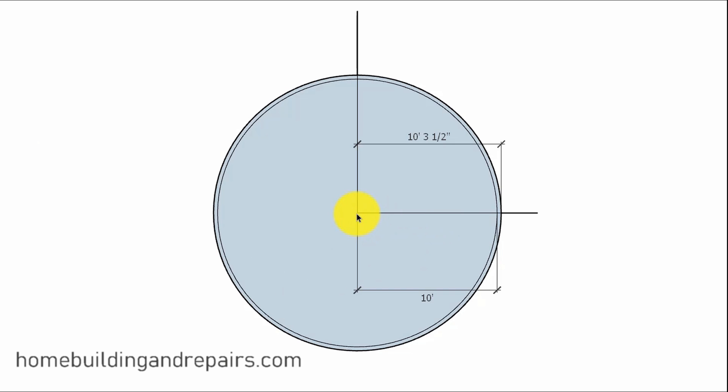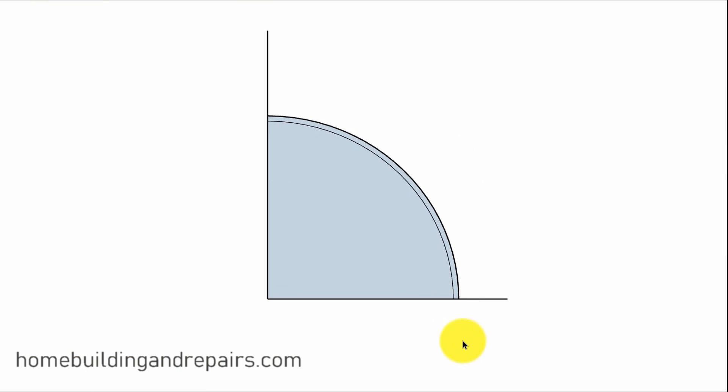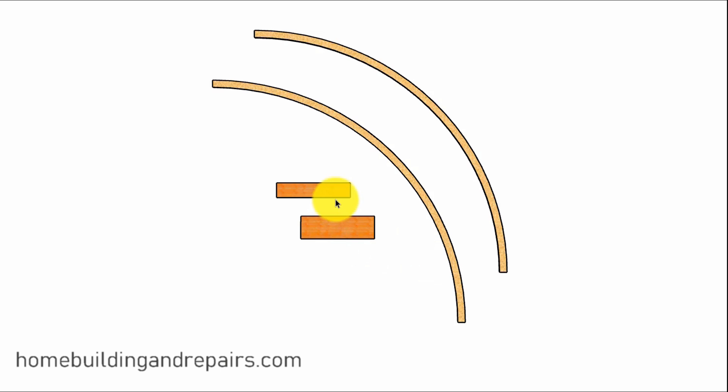We're going to start with a 10-foot radius. The wall is going to be 3 1⁄2 inches wide, 2 by 4, or I should say 3 1⁄2 inches wide with our shape. Then we're going to cut a curved plate out of plywood, OSB. Here I have a 2 by 8 and a 2 by 12, I believe. We have our two framing plates.